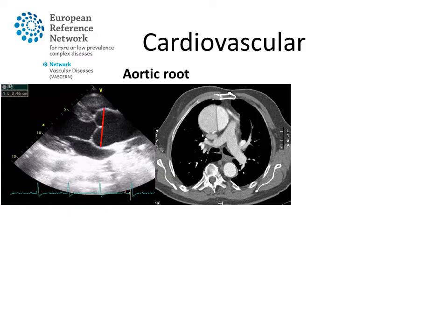Marfan syndrome affects multiple organ systems, among which the cardiovascular organ system is very important, since cardiovascular complications will affect the life expectancy of people with Marfan syndrome. The aortic root, which is the proximal part of our largest body vessel originating at the aortic valve, will typically dilate at a much faster rate than in normal people.